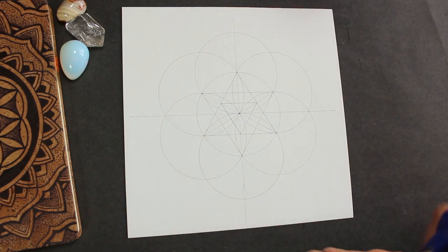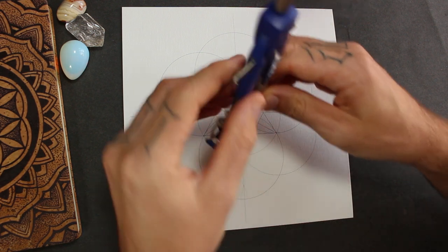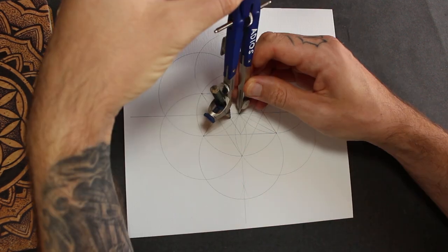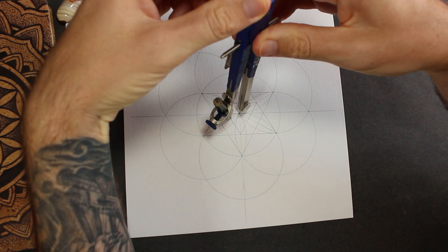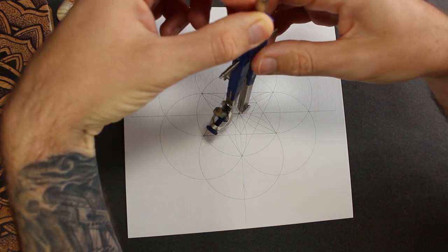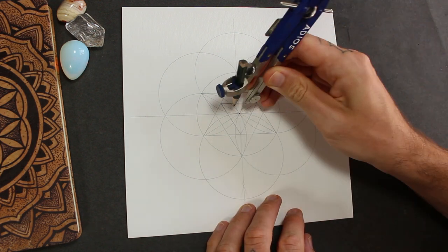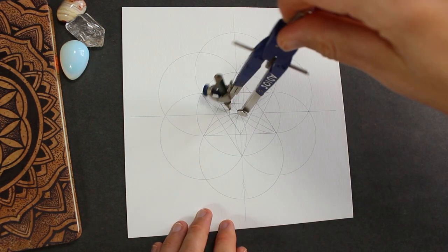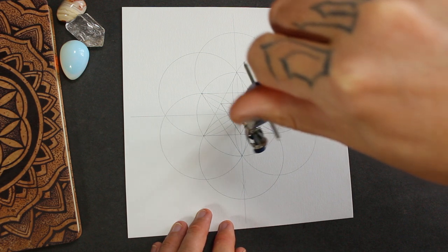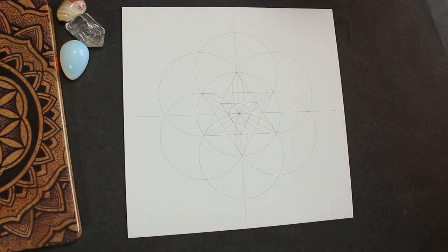And the final part of the symbol in the center is a circle. It's going to be quite small, right in the middle of that triangle. So adjust your compass to this line here on the point where this line crosses the smaller triangle. And draw a small circle inside. That's the symbol in the center finished.